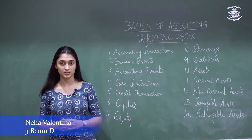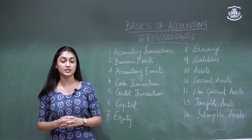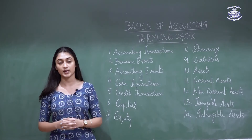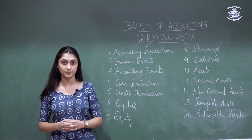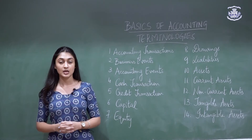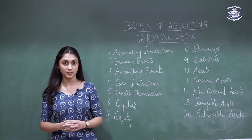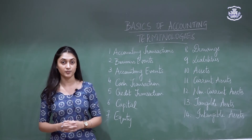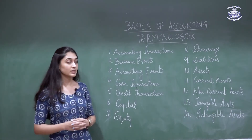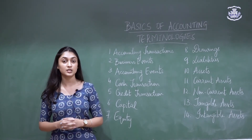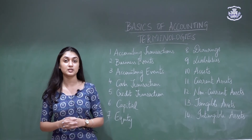We will now look into some important accounting terminologies. Accounting transactions are business events which can influence the financial position of the organization and hence are to be recorded in the books of accounts. All transactions are events, but not all events are transactions. Business events are occurrences such as placing an order by a customer, death of a partner, or admission of a partner into the firm, which are not recorded in the books of accounts. Accounting events are consequences of accounting transactions — for example, the value of closing stock or the profits earned by the business.